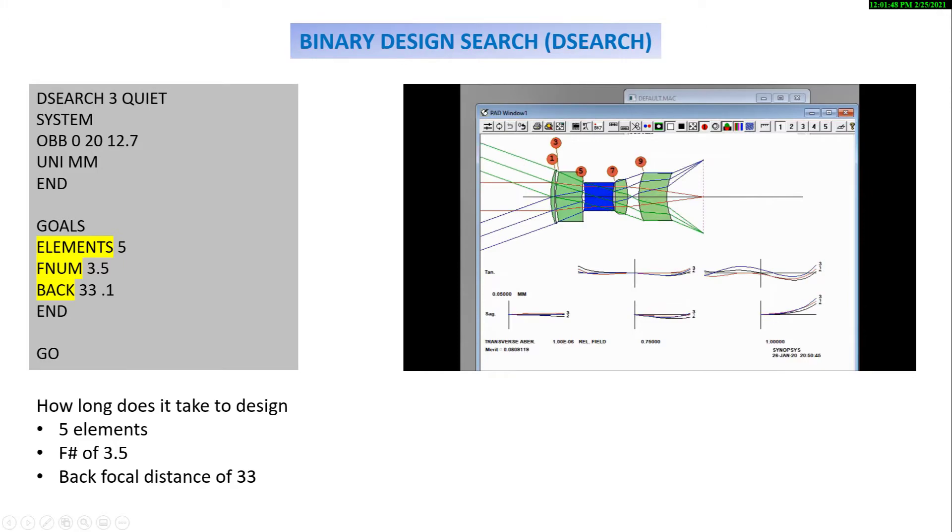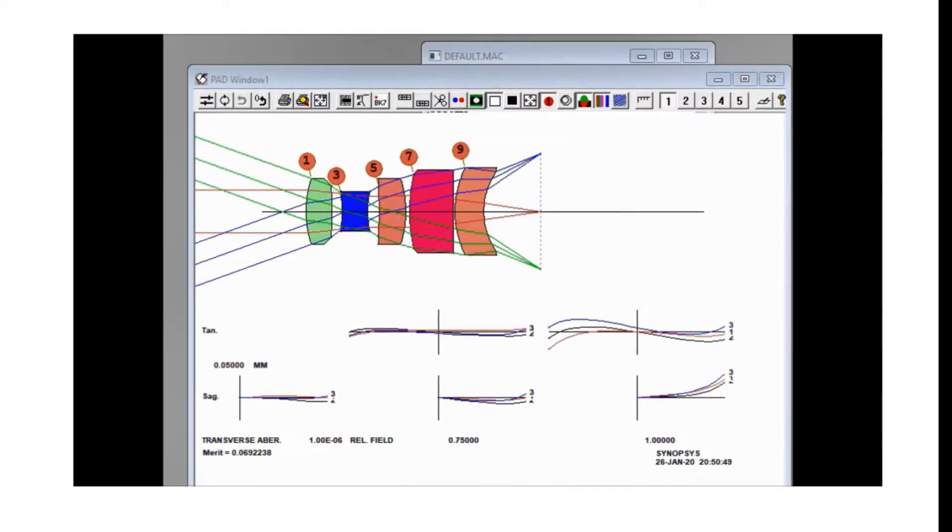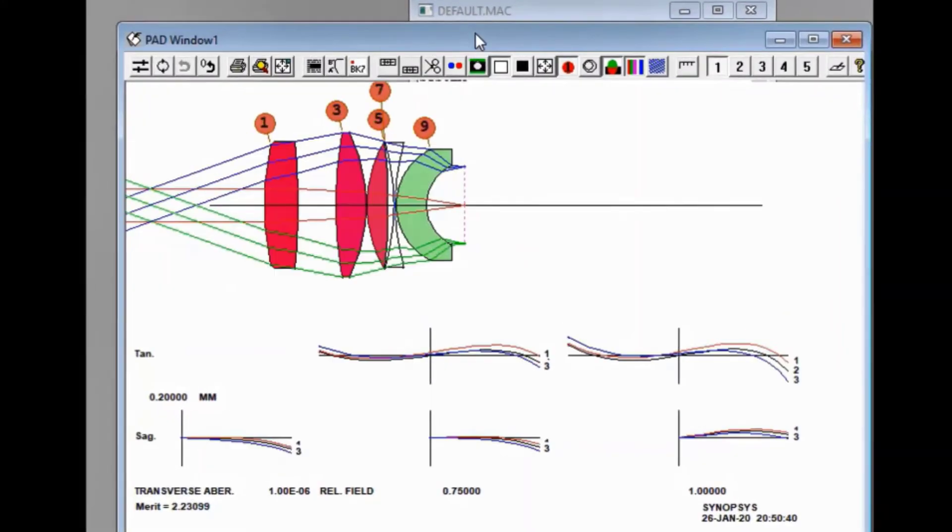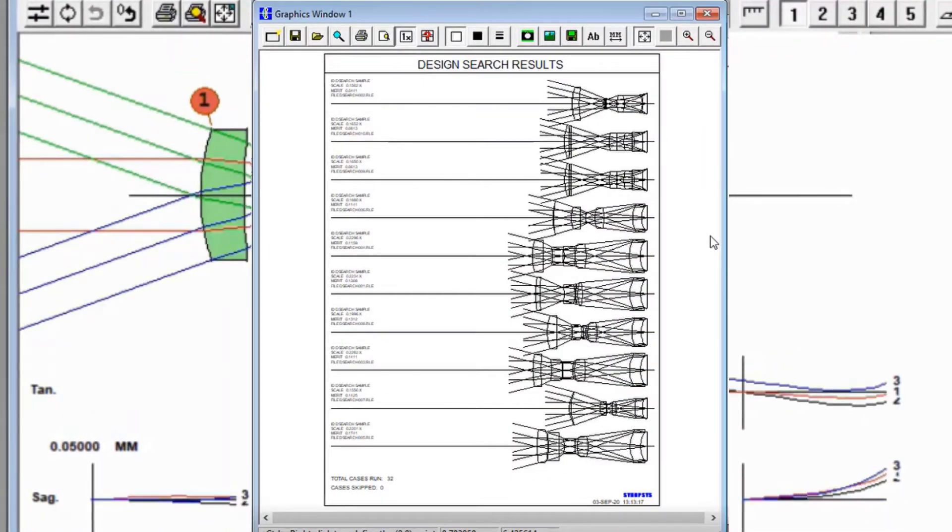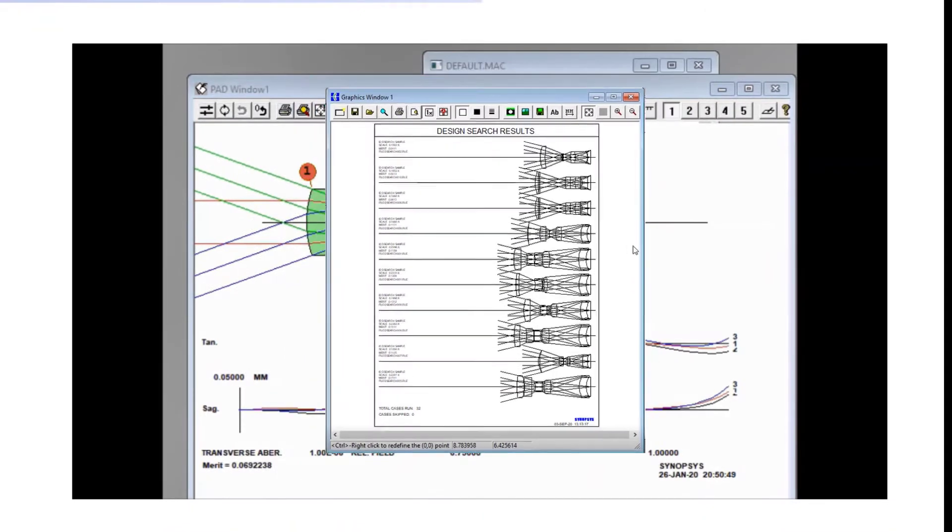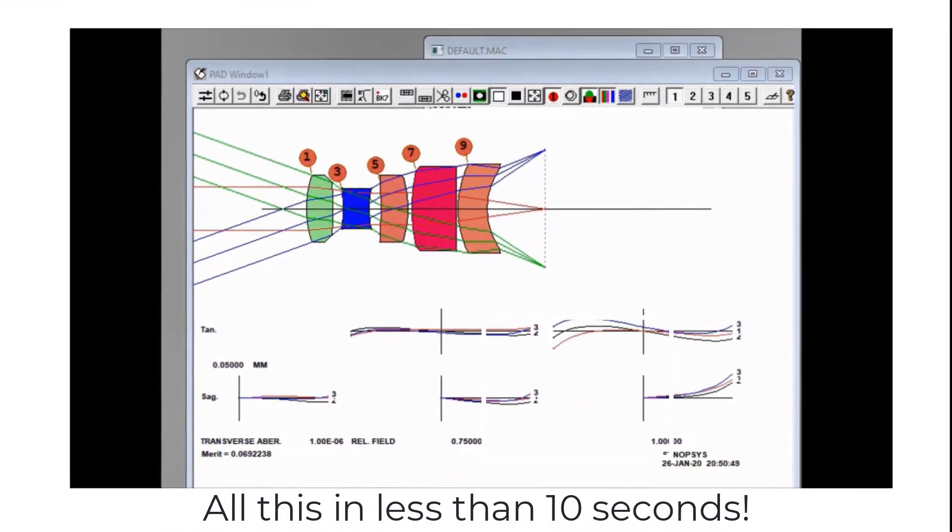The binary search algorithm will start searching through all possible combinations of these five elements while performing optimization at the same time, and return to you the 10 best candidates for your five-element system design starting point. This takes less than 10 seconds.